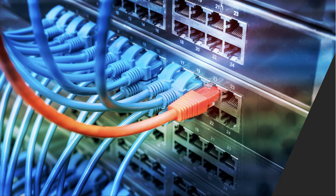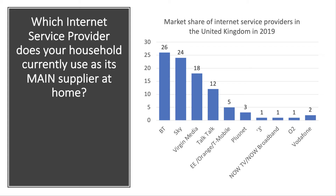Our second example is internet service providers. Here's the data — people were asked by Ofcom: which internet service provider does your household currently use as its main supplier at home? There's the market share of the main ISPs in the UK. Again, some dominant firms there, although not quite as dominant as our previous example, so there's a wider range of options.